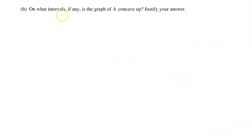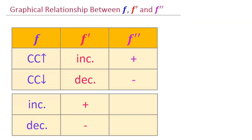Part B: on what intervals, if any, is the graph of h concave up? Justify your answer. We can tell if a function is concave up or concave down based on the sign of the second derivative. If f double prime is positive, the function is concave up. If f double prime is negative, the function is concave down.